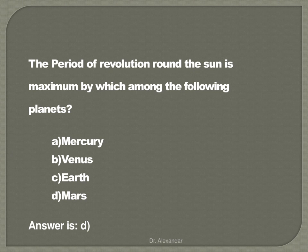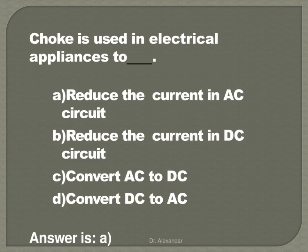The period of revolution around the Sun is maximum for which among the following planets? The answer is Mars. A choke is used in electrical appliances to reduce the current in an AC circuit.